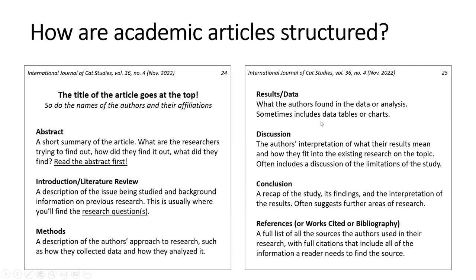Then the conclusion — a recap of the research, its findings, and the author's analysis and interpretation of the results. Often, the authors will suggest potential future areas of research based on additional questions that came out of their work. And lastly, the references list, or works cited list, or bibliography — this is the full list of all sources the authors used, with full citations including all information a reader would need to find the source on their own.